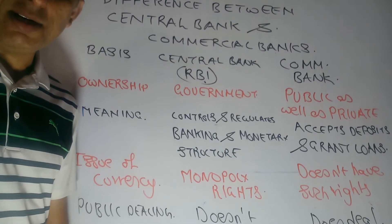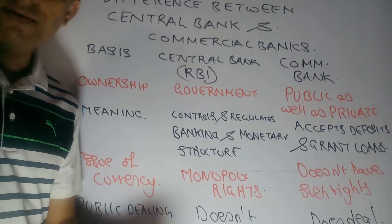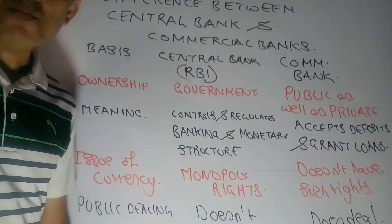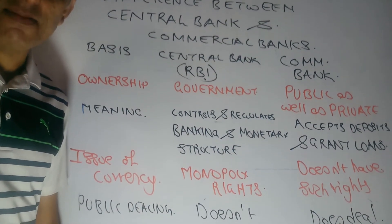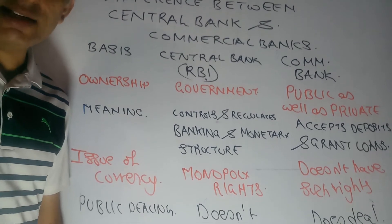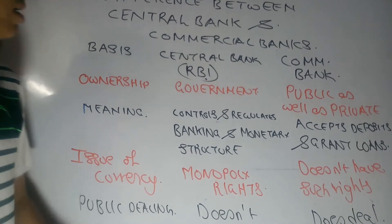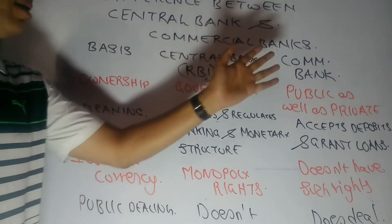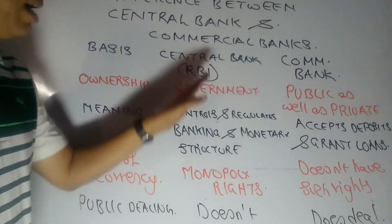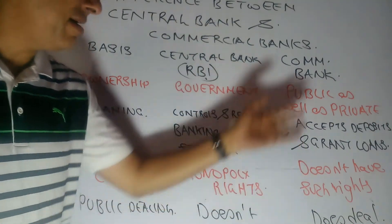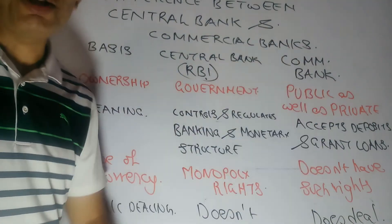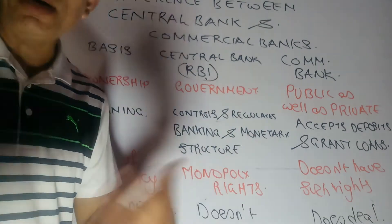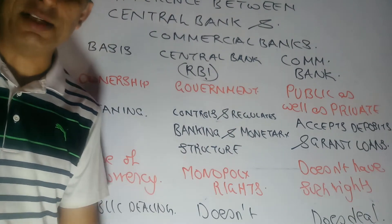Let's move ahead to one important aspect of money and banking — the difference between commercial bank and the central bank. The basis is given and the two banks in consideration are RBI as central bank and commercial bank, for example SBI. There are multiple commercial banks we have in our vicinity.